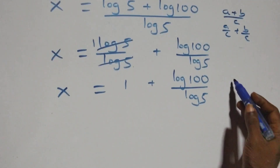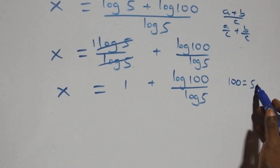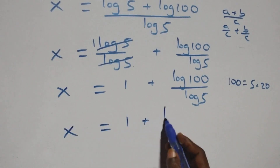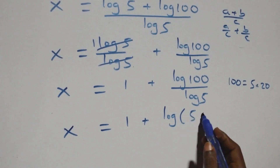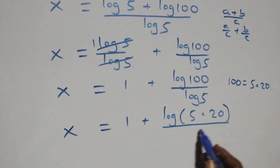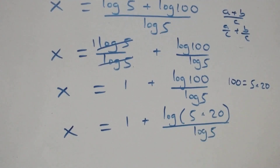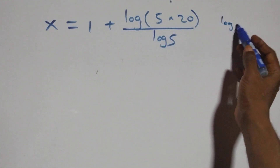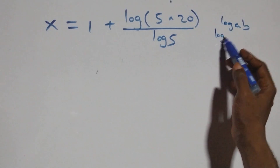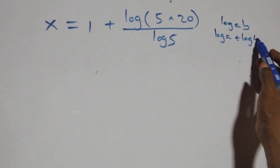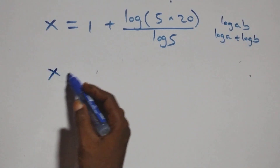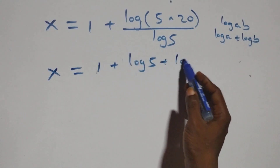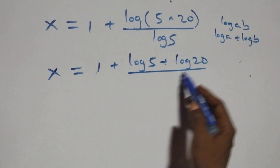Also, from here we can write 100 as 5 times 20. So this becomes x equals to 1 plus log of 5 times 20, over log 5. This also follows the product law of logarithm: log a times b is the same as log a plus log b. So we have x equals to 1 plus log 5 plus log 20, over log 5.